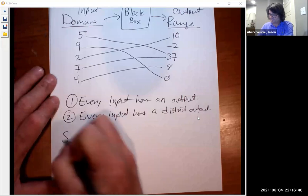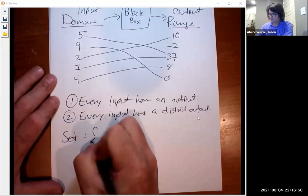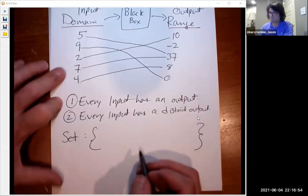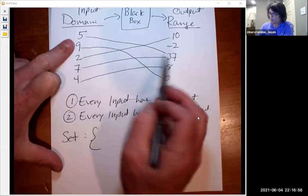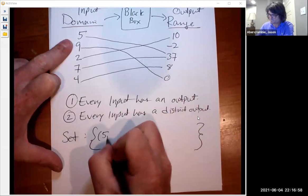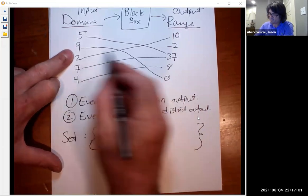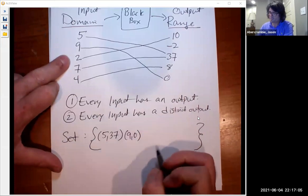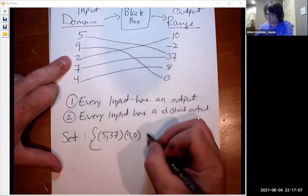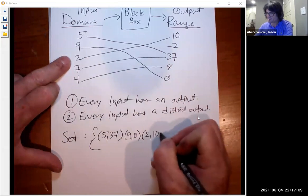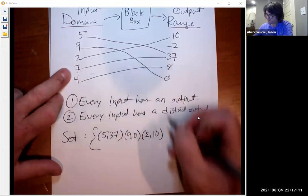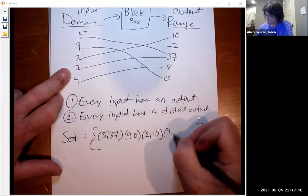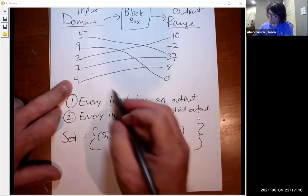I'm going to say a set, and that uses curly brackets. And the set is a bunch of ordered pairs. Five and 37, for example, and then nine and zero is another point. A relation in the set, two and ten. These ordered pairs are called relations. And then seven and 37, and then four and eight.